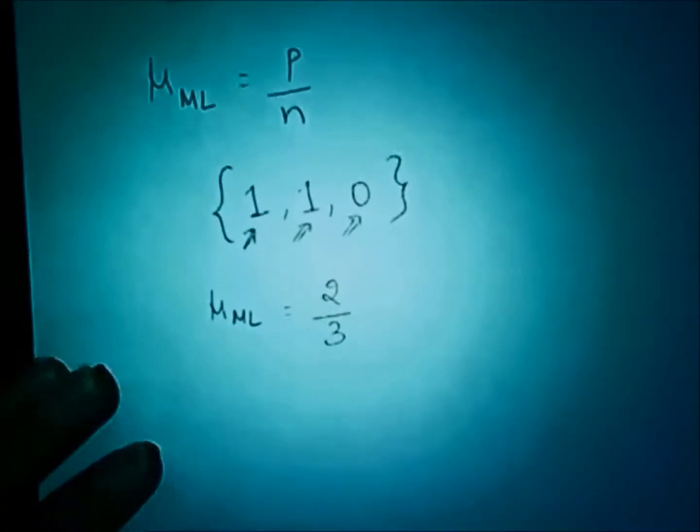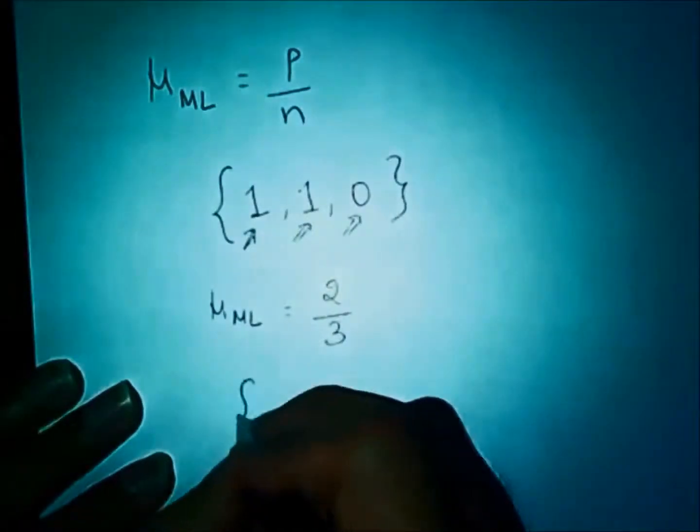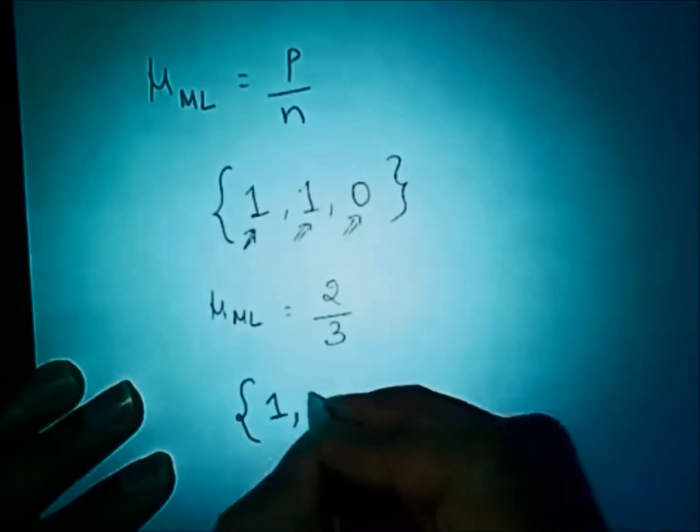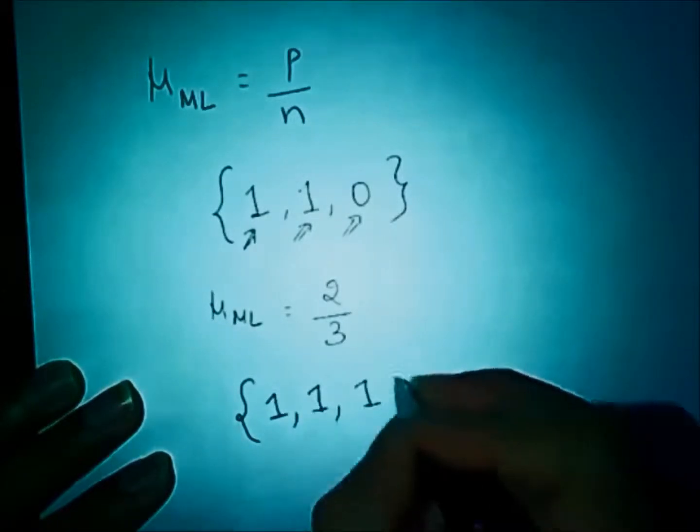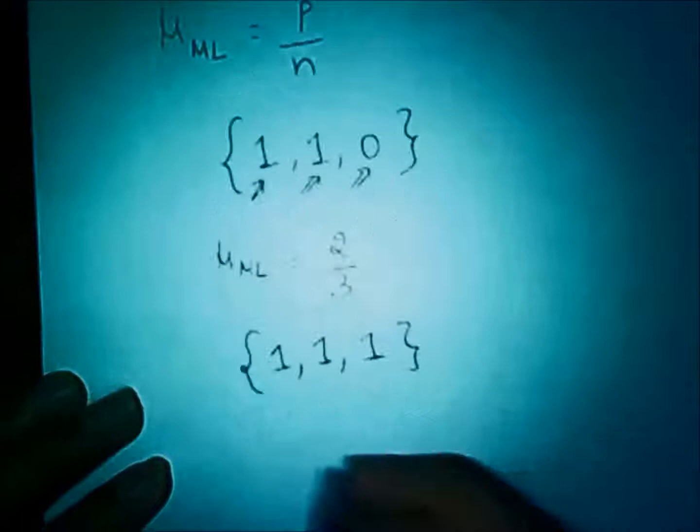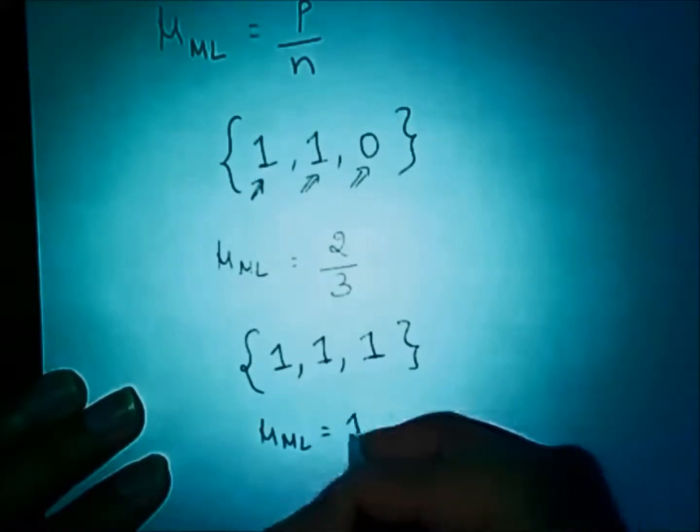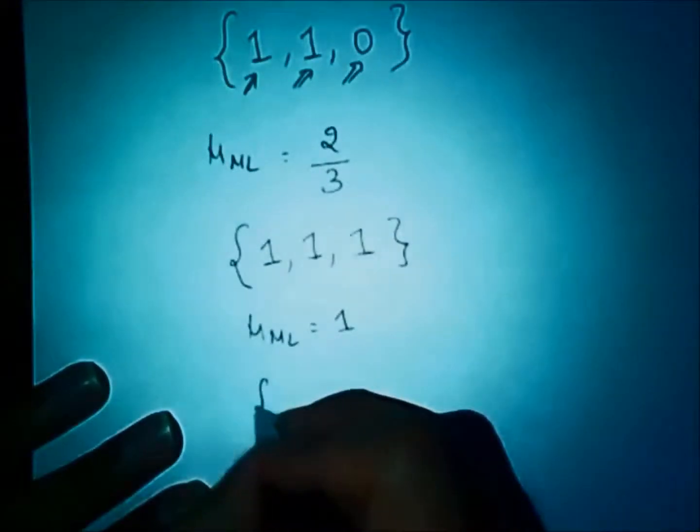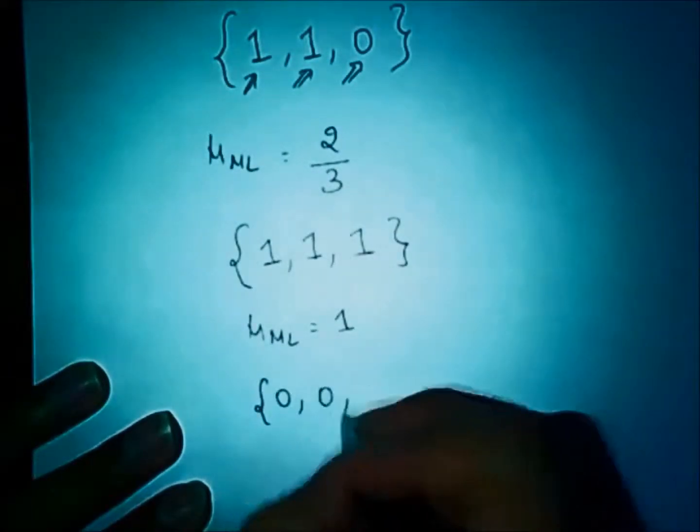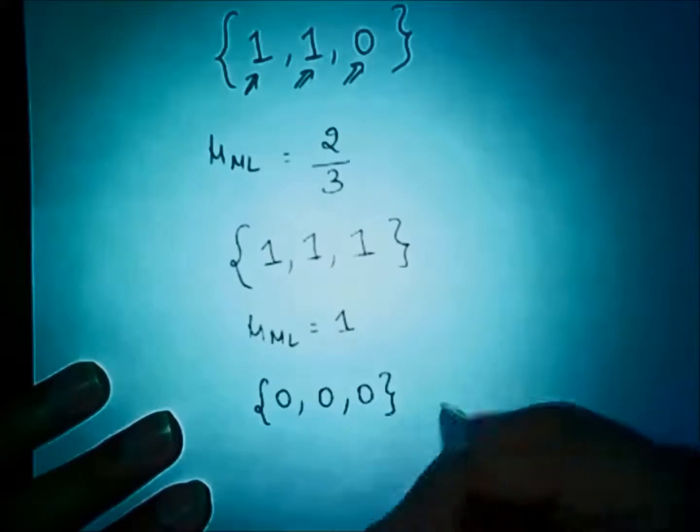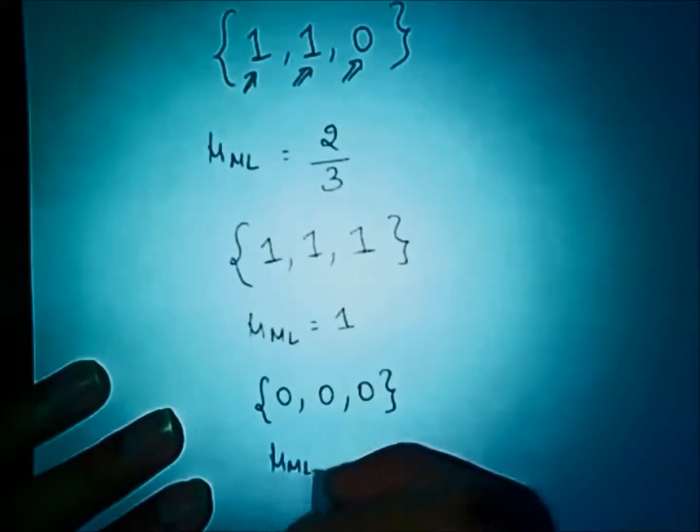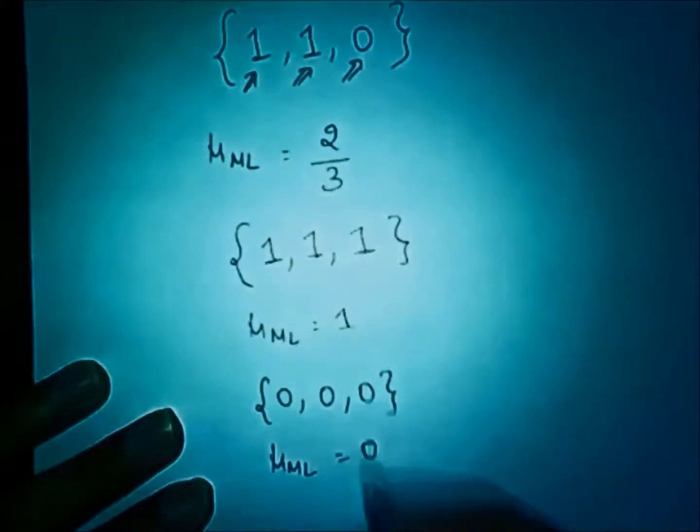This seems logical, but what about 1, 1, and 1? In this case I am going to get a mu_ML of 1. And what if I had obtained 0, 0, and 0? I am going to get a mu_ML of 0.